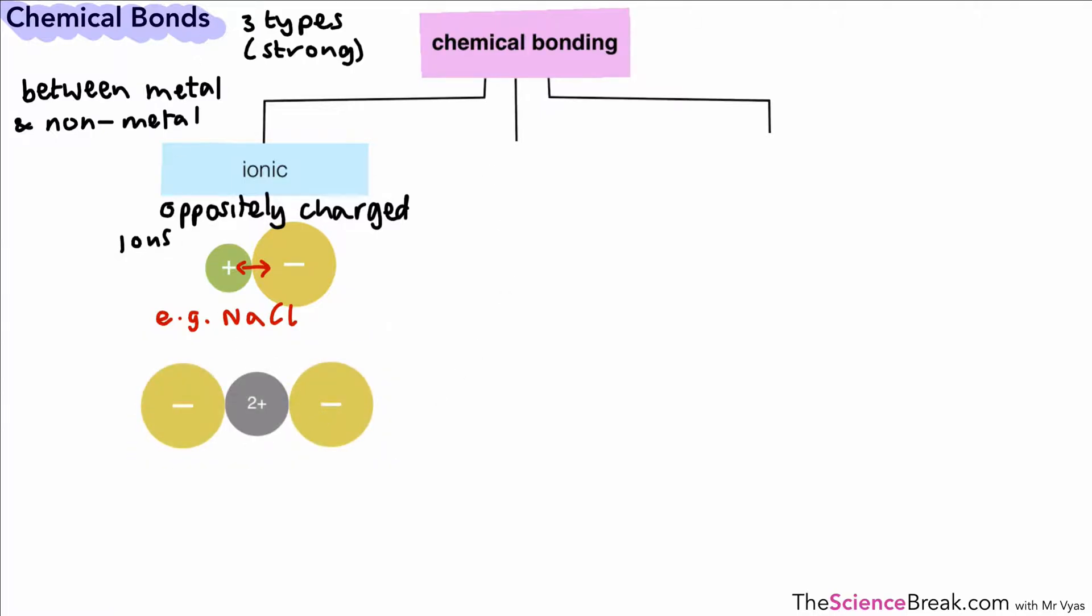We can look at another example: magnesium chloride, written as MgCl2. We have a plus two charge on the magnesium, so we need two minuses to balance out that two plus charge.